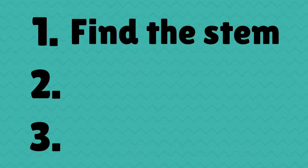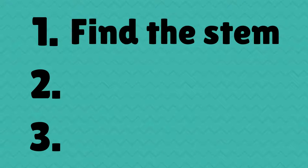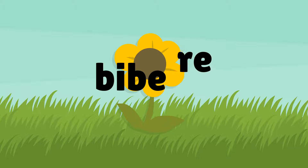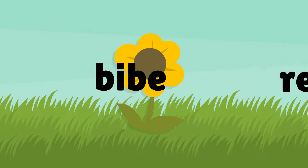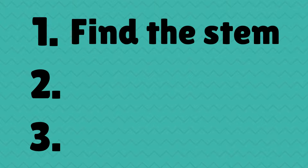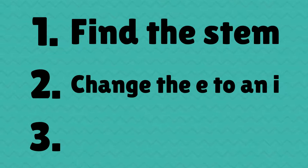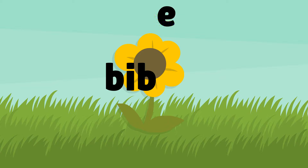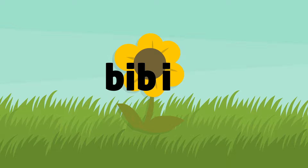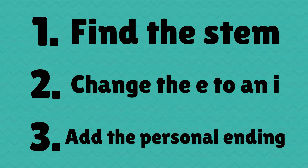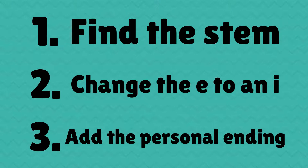There are three steps to forming the present tense. First, we find our stem. We do that by taking the RE off the second form. For our second step, we change the E at the end of our stem to an I. For our third and final step, we add our personal ending.